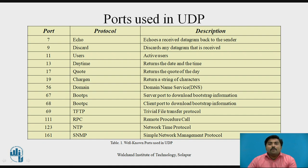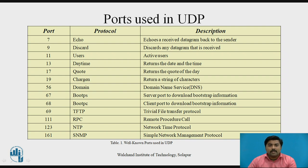Here are some well-known port numbers used in UDP. Port number 7 has the protocol 'Echo', which echoes the received datagram back to the sender as confirmation of receipt. Another commonly used one is port 13, with the protocol 'Daytime', which returns the current date and time.